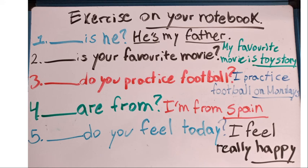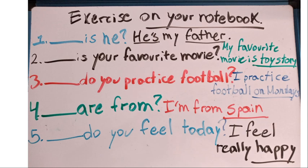Finally, on your notebook, you have to write these five exercises and complete them with the right question word. Number one: '__ is he?' — He's my father. Number two: '__ is your favorite movie?' — My favorite movie is Toy Story. Number three: '__ do you practice football?' — I practice football on Mondays. Number four: '__ are you from?' — I'm from Spain. Number five: '__ do you feel today?' — I feel really happy. Please write these on your notebook and send the photos to your teacher.